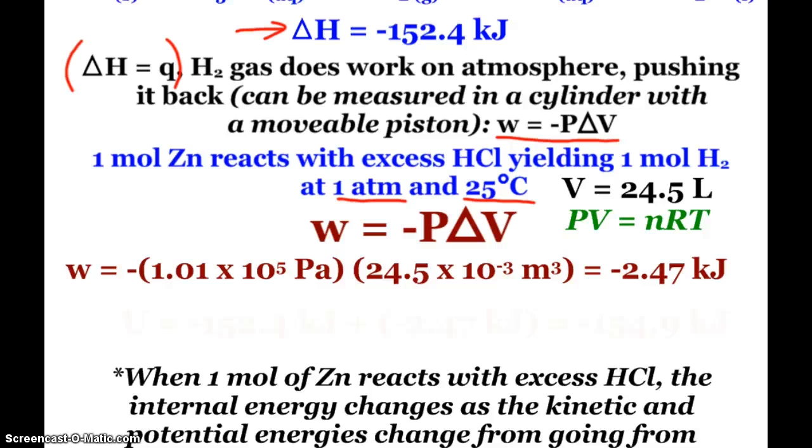But when I have that information, I can find the volume, the change in the volume of the gas that's produced, thanks to PV=nRT, the ideal gas law. I know pressure, moles, R, and temperature. So my volume in this situation is 24.5 liters.